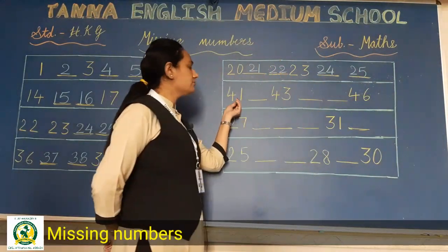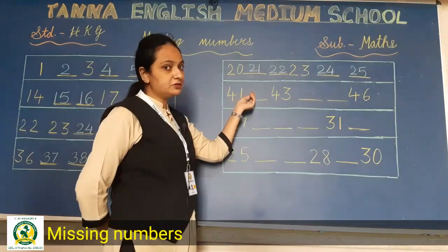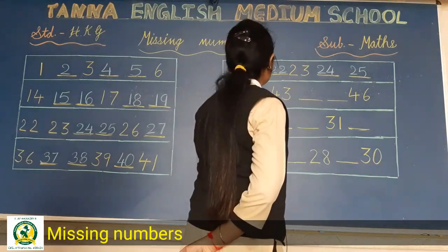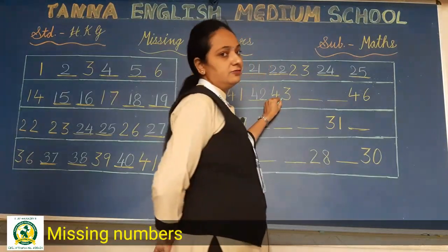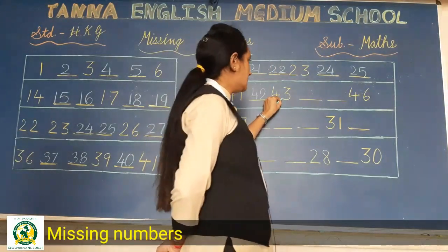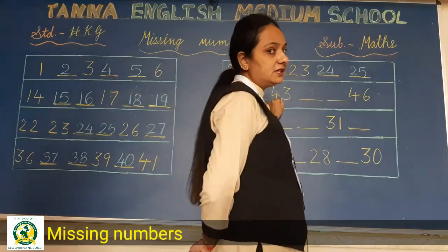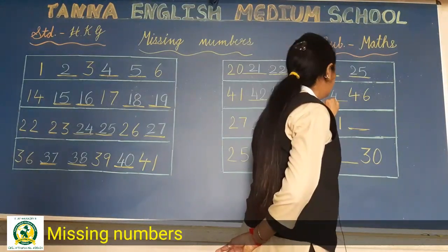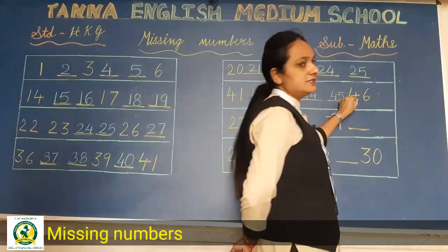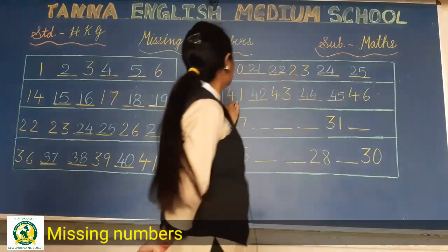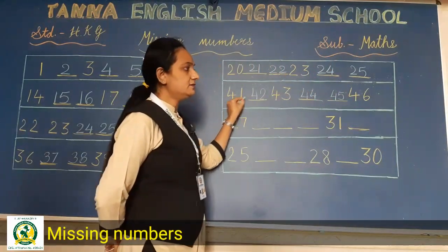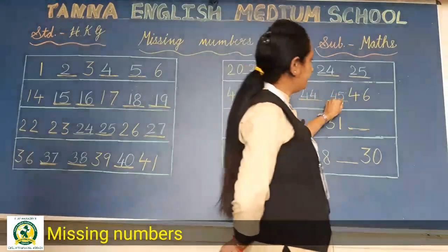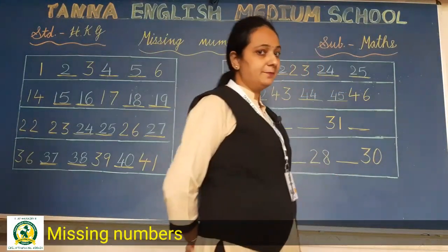Now 41 is written. What will come after 41? Yes, 42. Then 43. What will come after 43? 44 and 45. Then 46 is written. See: 41, 42, 43, 44, 45 and 46. Completed.